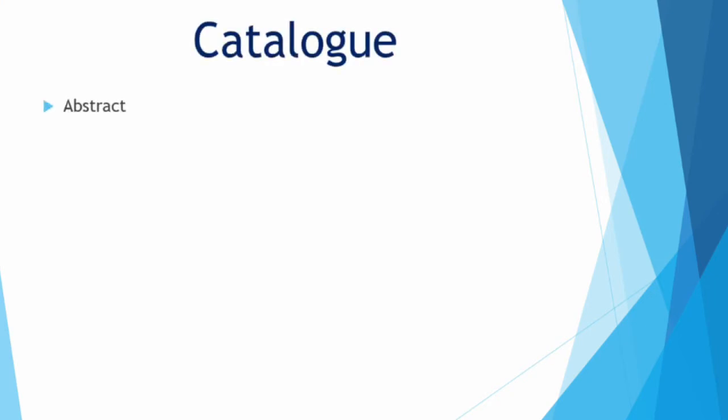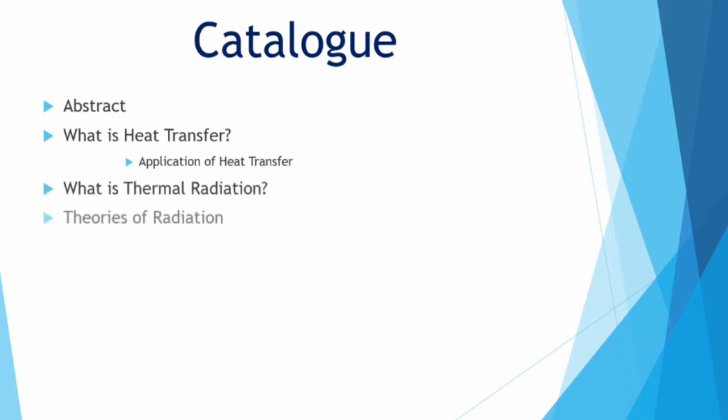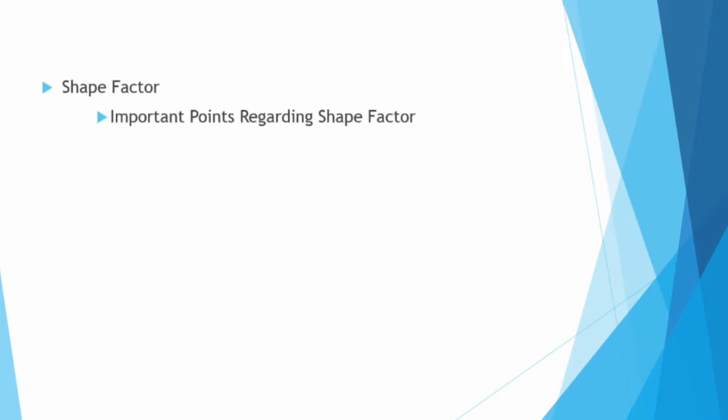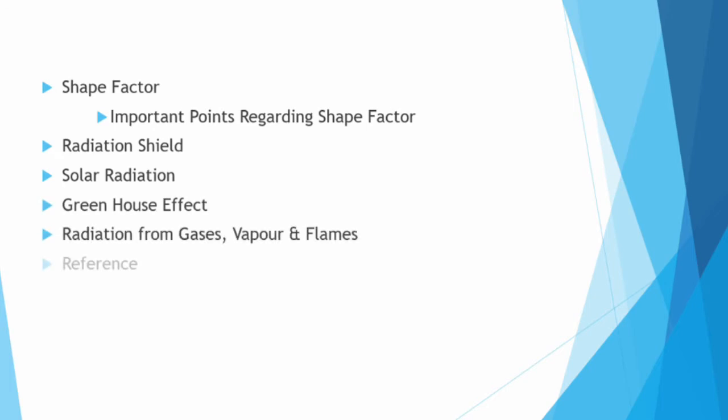The catalog includes: what is thermal radiation, theories of thermal radiation, properties of radiation, types of bodies, surface emission properties, laws of radiation, heat exchange between two finite black surfaces by radiation, shape factor and important points regarding shape factor, radiation shield, solar radiation and greenhouse effect.